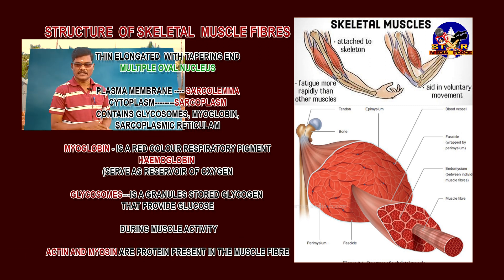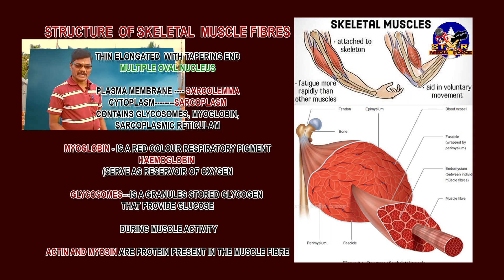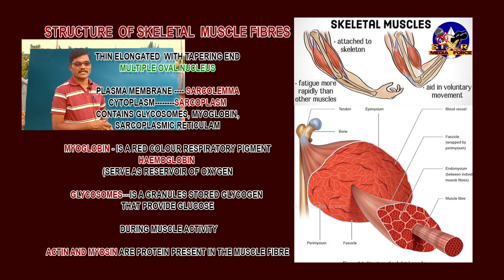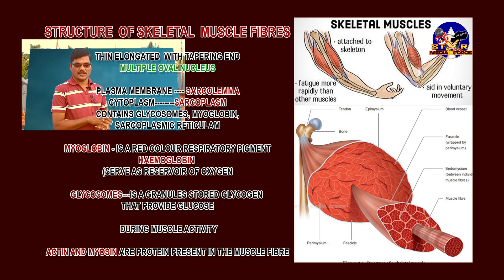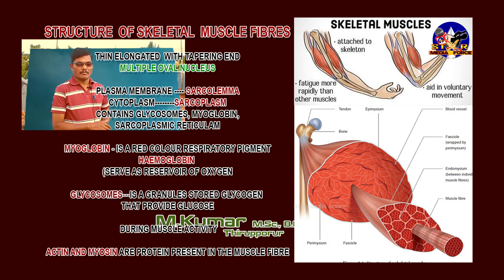Myoglobin is a respiratory pigment. The respiratory pigment contains oxygen, just like hemoglobin. It serves as a respiratory reservoir of oxygen — meaning a storage place for oxygen inside the muscle fiber. That is called myoglobin.